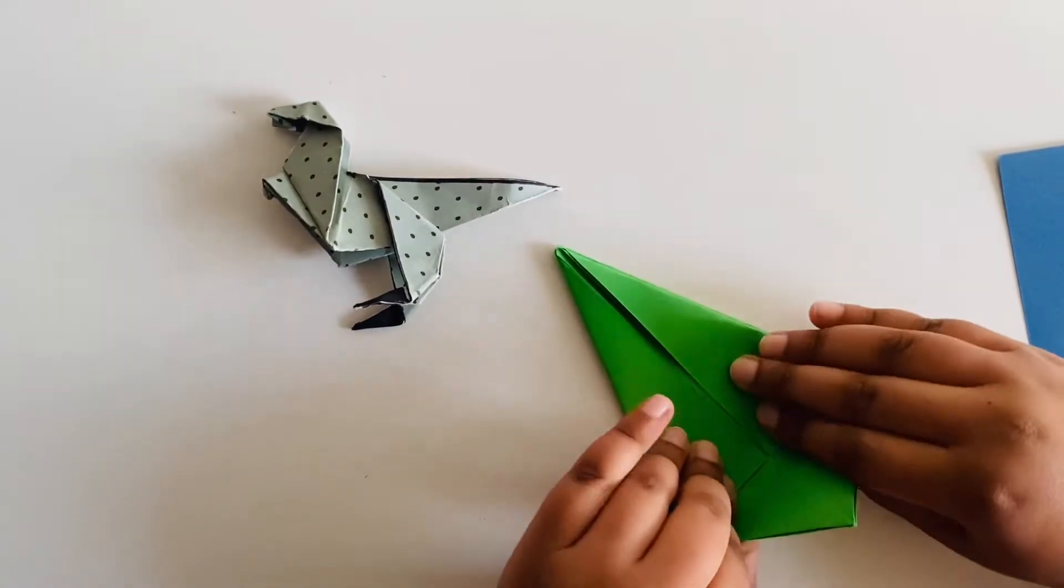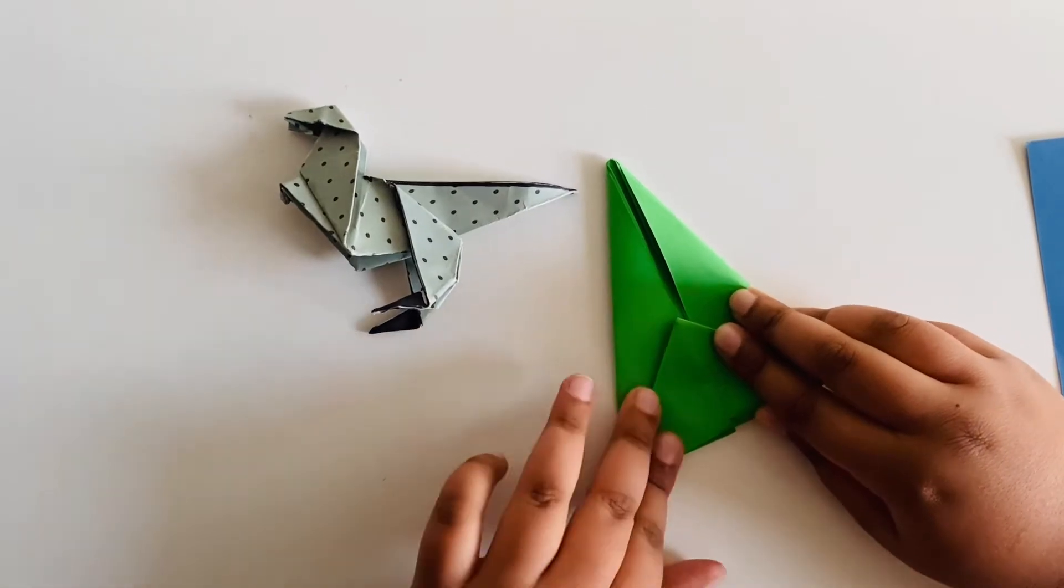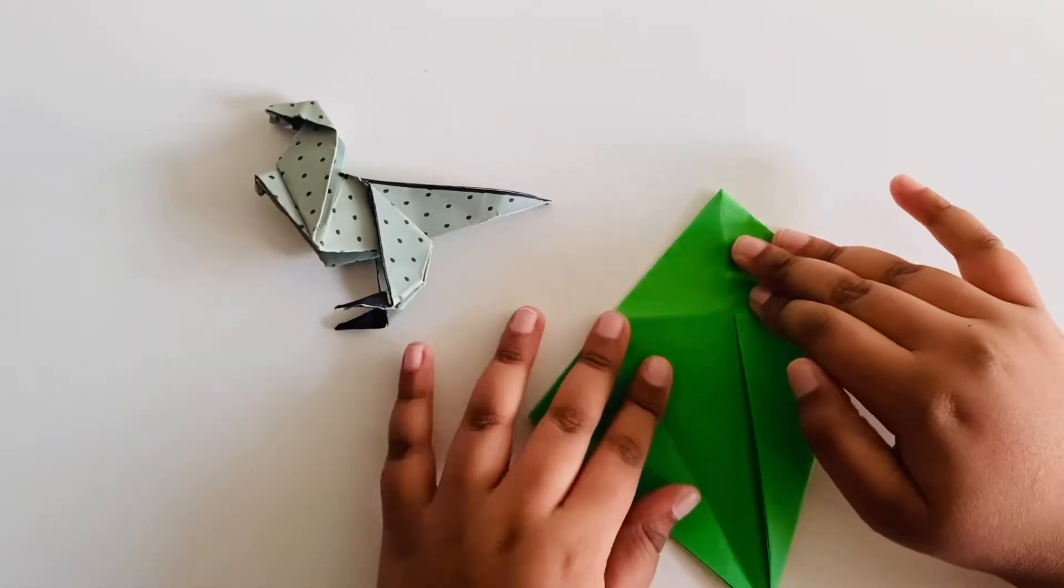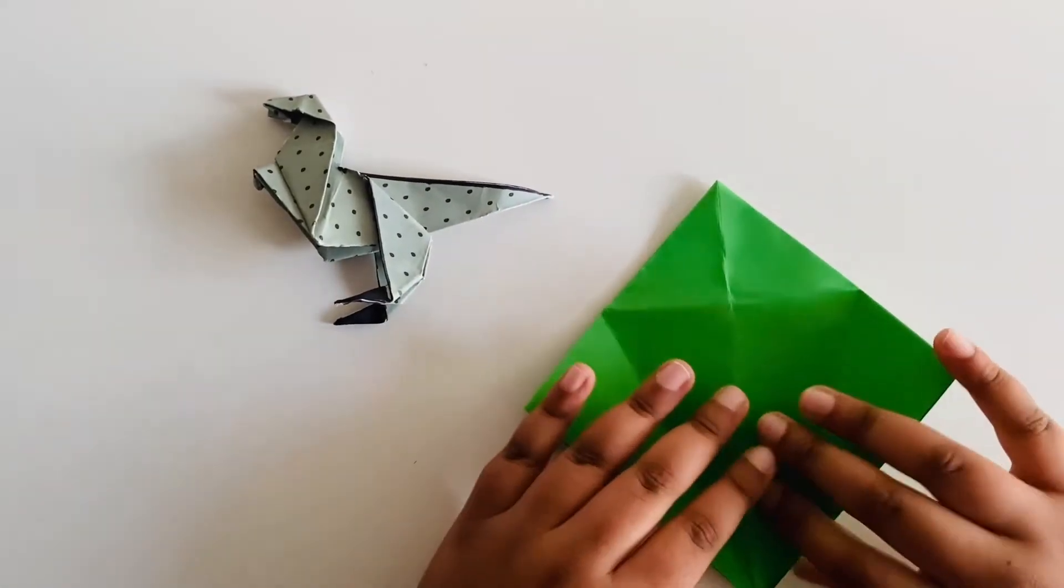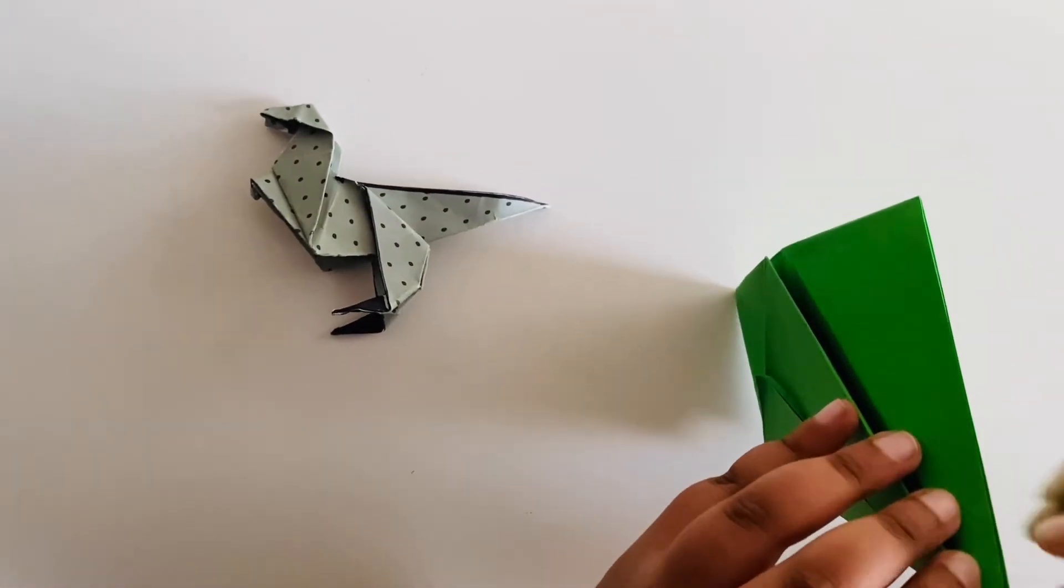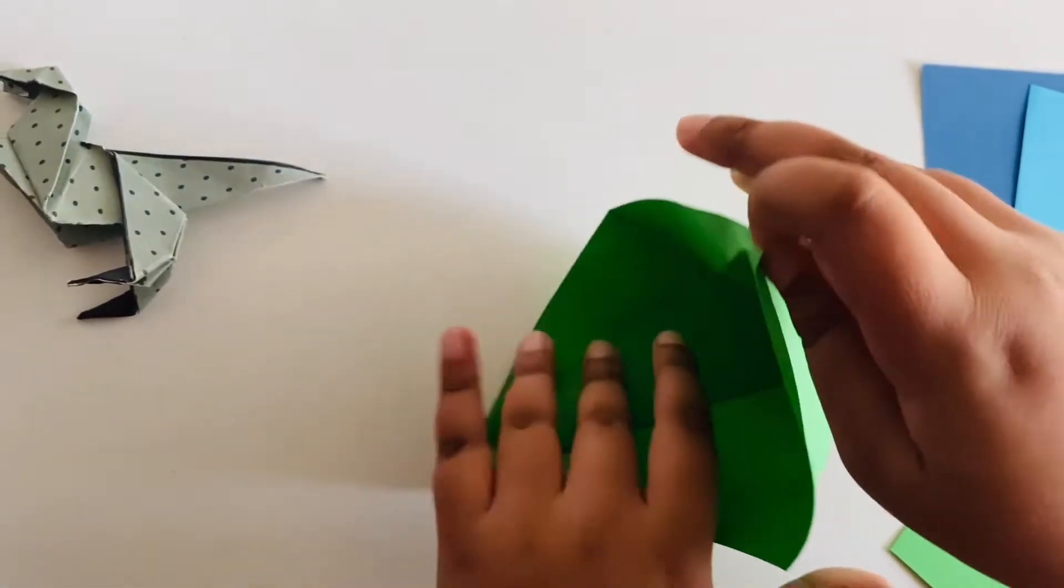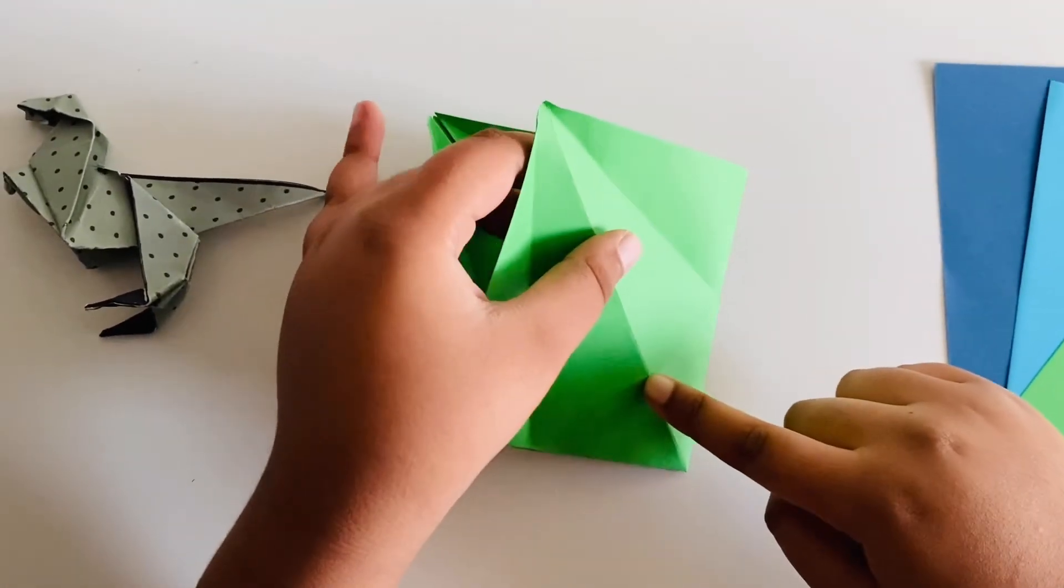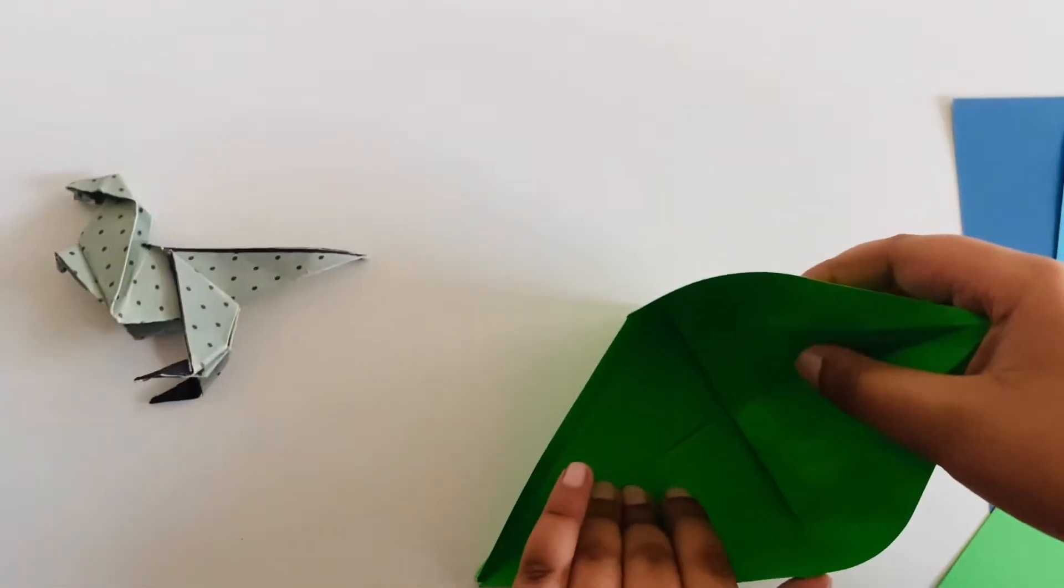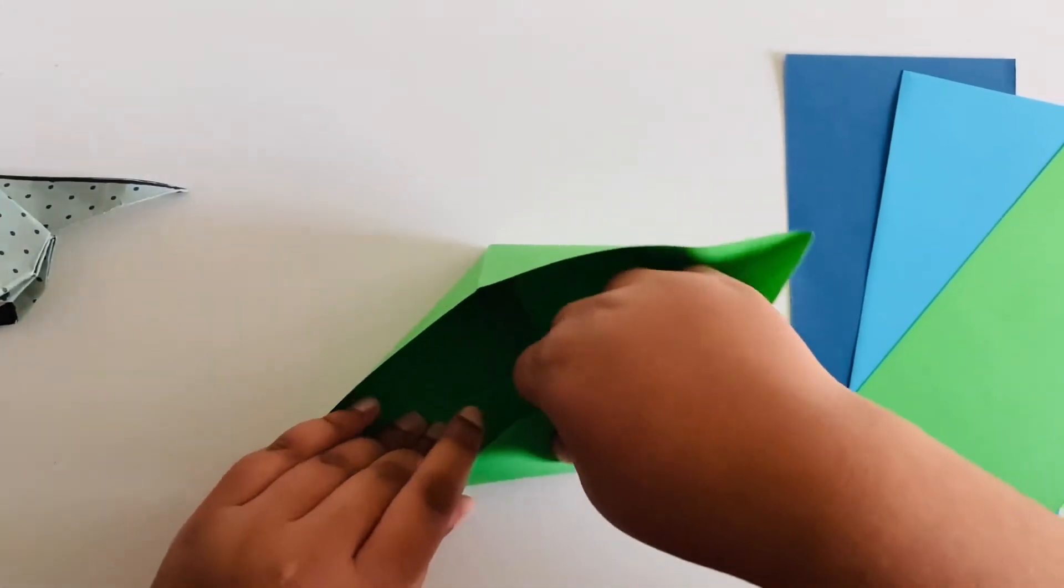And then fold it to the other side downwards once again and then open this up. And then underneath you will see that there are these parts so take the first layer like that and then since there will be a crease here, press it like that till the line comes and then turn it like this.